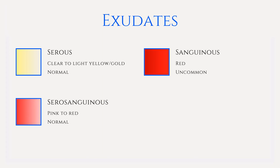Serosanguinous exudate is typically seen around the midpoint of the healing process. It gets its pink to red color as it is made up of red blood cells and serous fluid. It is generally this type of drainage seen in surgical drains.